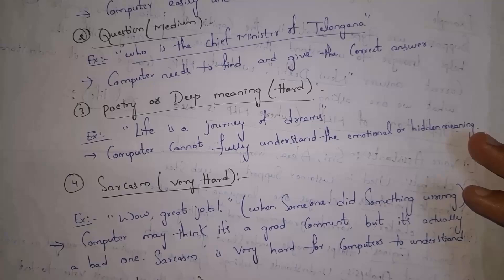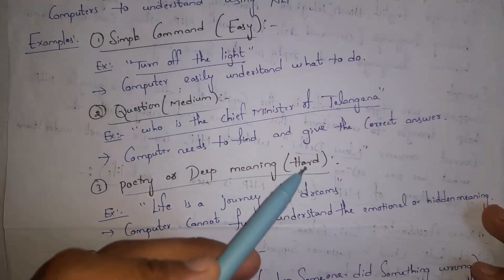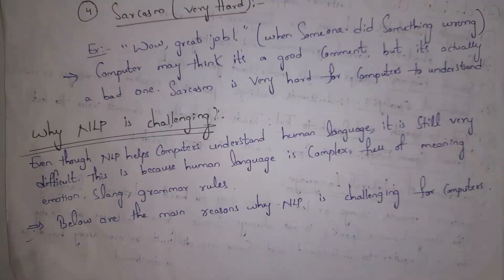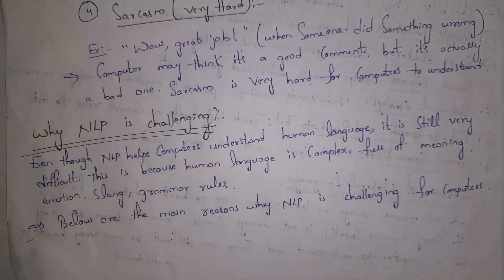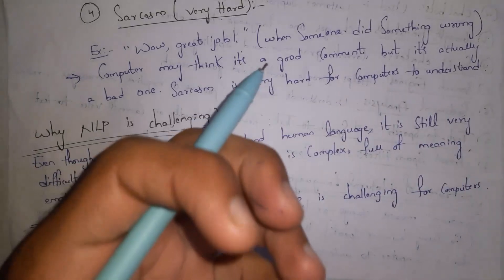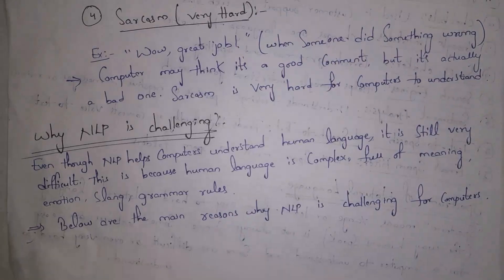This is all about the spectrum of natural language — levels from easy, medium, hard to very hard. Next I will explain why NLP is challenging. Even though NLP helps computers understand human language, NLP is still difficult because human language is complex, full of meanings and emotions, each person speaks in different slangs, and each person follows different grammar rules. So understanding human language for NLP is challenging. Here are some of the main reasons why NLP is challenging for computers.